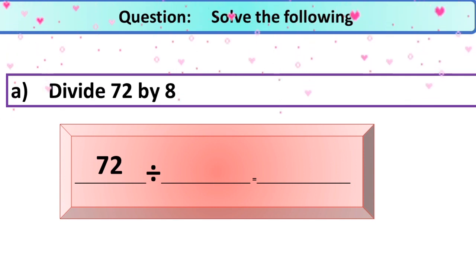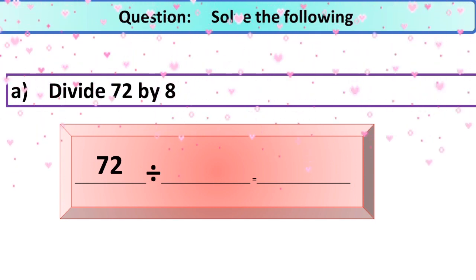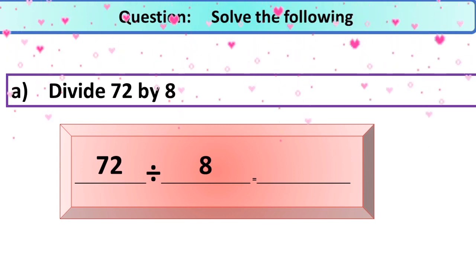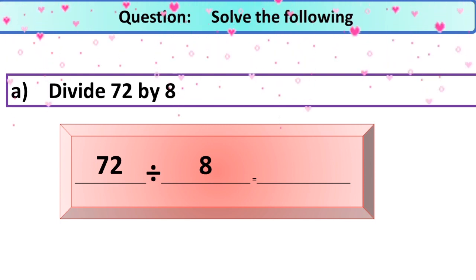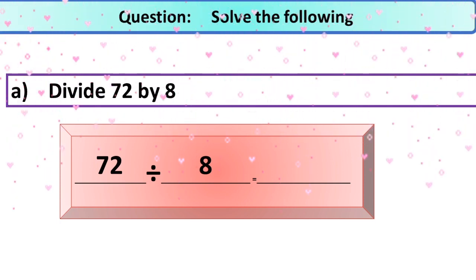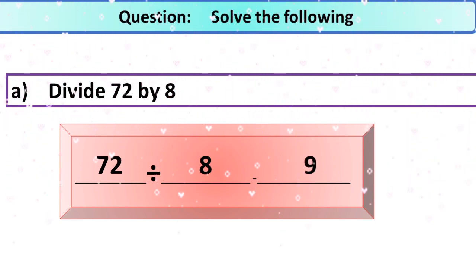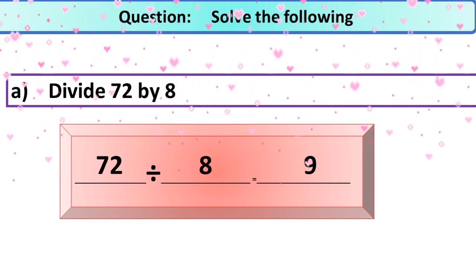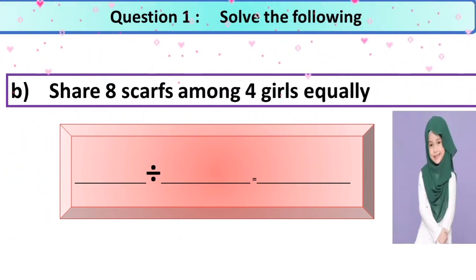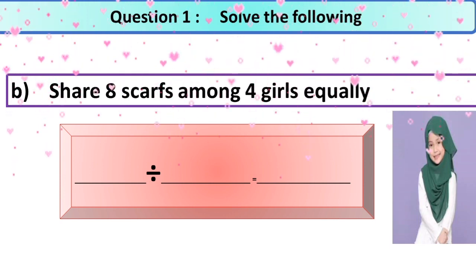Part A is divide 72 by 8. Simply you are going to write here 72 divided by 8. Now you are going to read the times table of 8, and you can check that in your times table of 8, 72 came at which number. Yes, very good. Here 8 times 9 is 72. Whenever you read the times table of 8 till 9, you get the number 72.